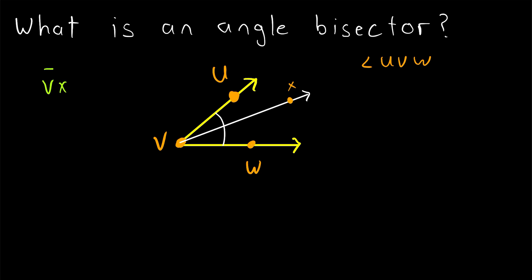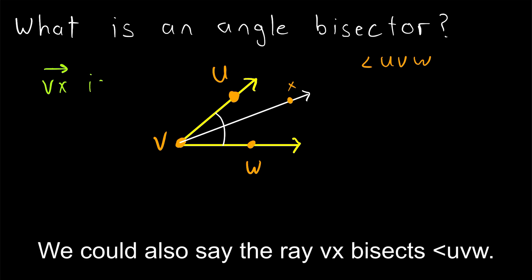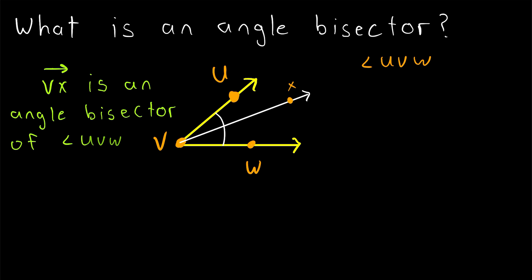So if the ray VX is an angle bisector of the angle UVW, that just means that the ray VX cuts the angle UVW into two smaller angles that are congruent. We could draw some white hash marks to denote that these two smaller angles are congruent. So the ray VX sort of cuts UVW in half.